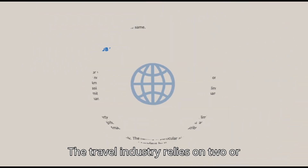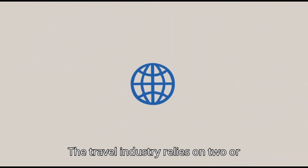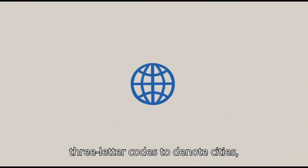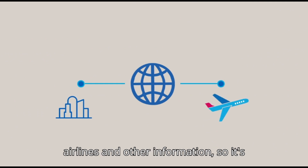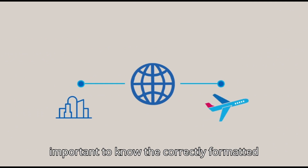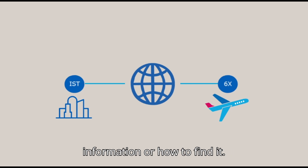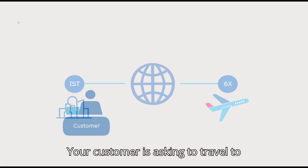The travel industry relies on two or three letter codes to denote cities, airlines, and other information, so it's important to know the correctly formatted information, or how to find it.